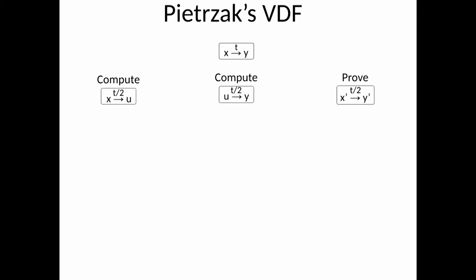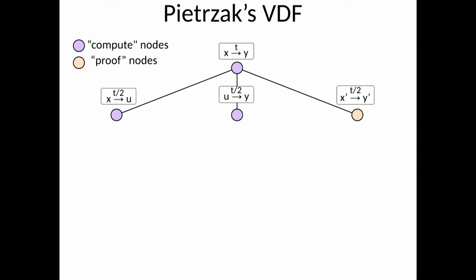So you can think about it as a tree, where purple nodes correspond to computation nodes and orange nodes correspond to proof nodes. So the prover does two long steps of computation and then one step of proof, and then the proof is recursively the same protocol, so again you split the computation into two computation steps and then one proof step. And so on and so forth. This is how the prover in Pietrzak's protocol sees the computation.